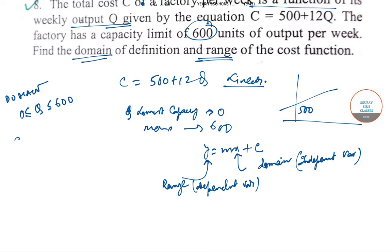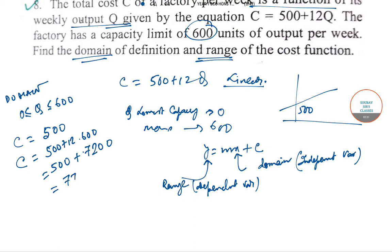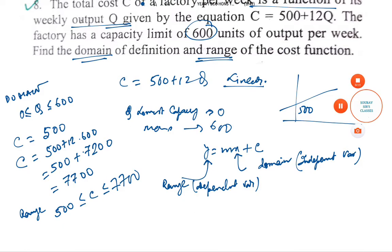If you put Q = 0, then C = 500. If you put Q = 600, then C = 500 + 12 × 600 = 7700. So the range is [500, 7700]. This gives us the domain and range for this question.